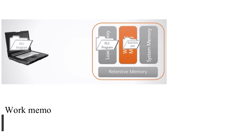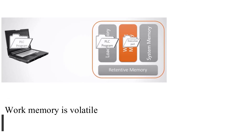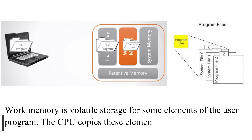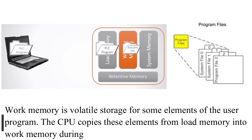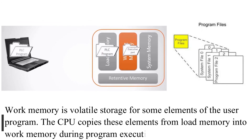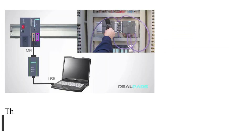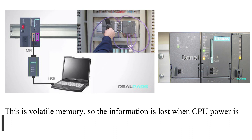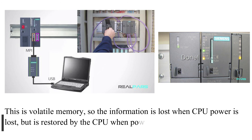Work memory is volatile storage for some elements of the user program. The CPU copies these elements from load memory into work memory during program execution. This is volatile memory, so the information is lost when CPU power is lost, but is restored by the CPU when power resumes.